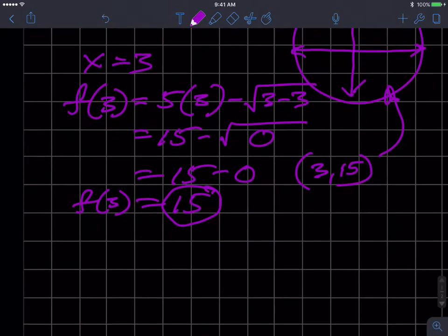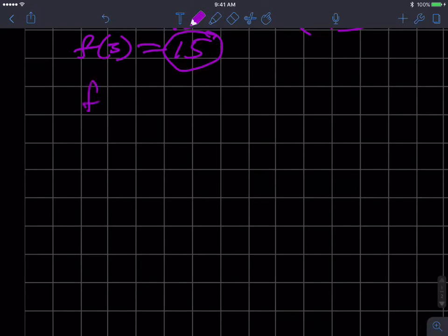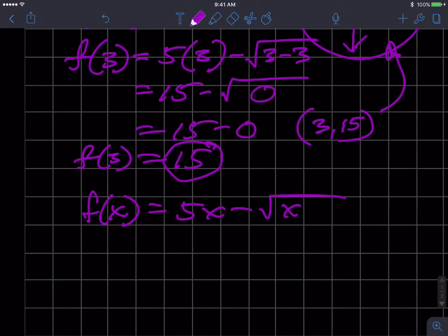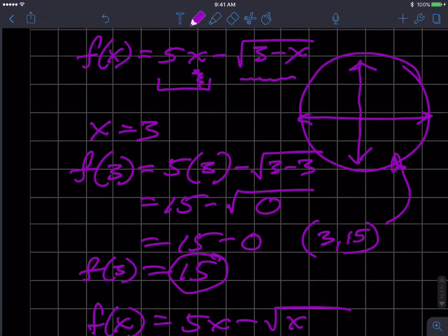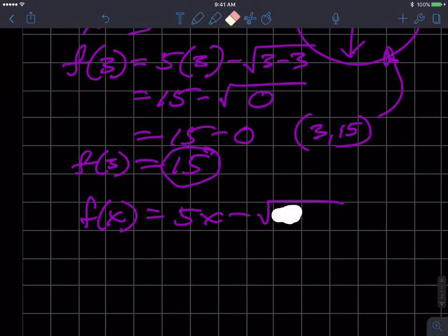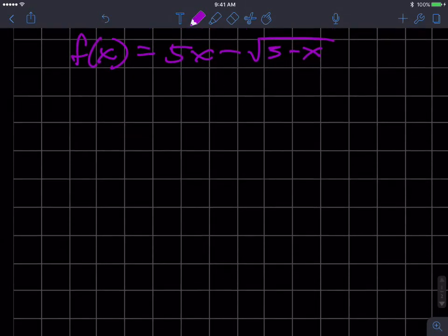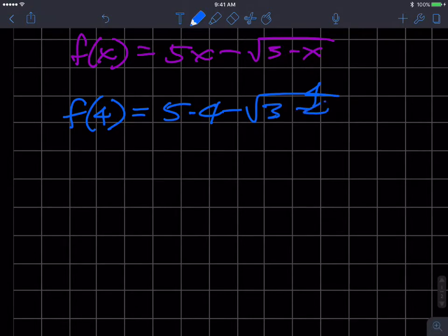What if I put in - that was my function again, 5x minus square root of 3 minus x. I might want to change color because that purple is kind of tough to see. What if I substituted in the number 4? So let's figure out what f(4) is: 5 times 4 minus the square root of 3 minus 4.